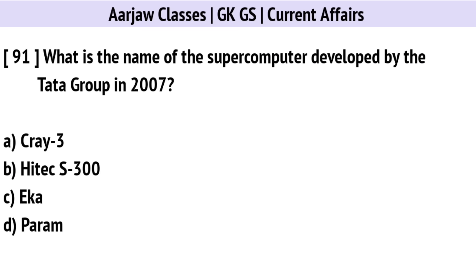What is the name of the supercomputer developed by the Tata group in 2007? The correct option is C: Eka.